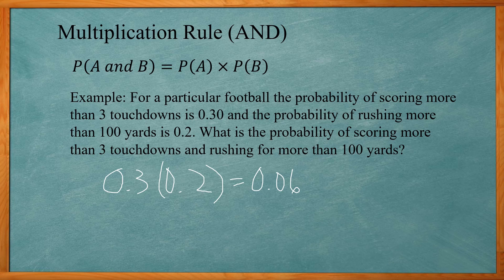If you had three events — the probability of A, B, and C — simply multiply all three probabilities together: probability of A times probability of B times probability of C. This extends to however many events you have; just multiply all the probabilities together.